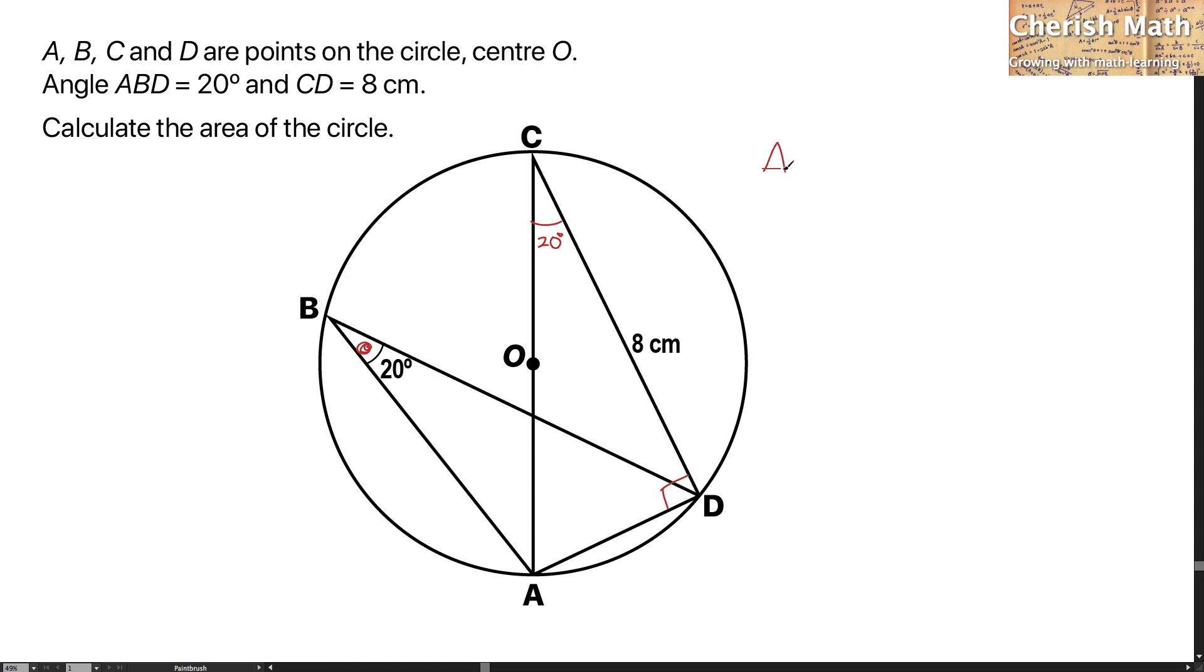By referring to the triangle of ACD, I'm going to work out by using the trigonometric method, and that will be cos 20 degrees equal 8 divided by the line of AC. So, for the value of AC, that would be 8 divided by cos 20 degrees.